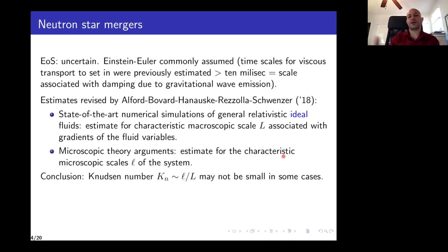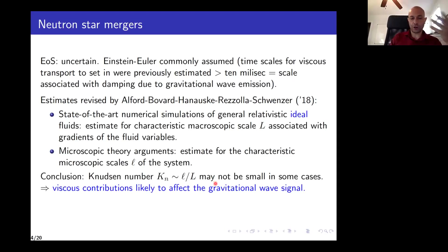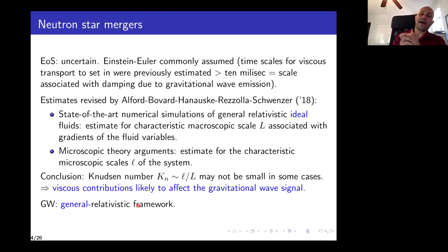Once they have these two estimates they can get an estimate for the Knudsen number. Their main conclusion is that the Knudsen number may not be small in some cases. If the Knudsen number is not small, then viscosity is going to be important. This tells us that viscous contributions are likely to affect the gravitational wave signal. So neutron star mergers are another example of a system where you want to go beyond the ideal model and include viscosity — and since we're discussing gravitational waves, we're in the realm of general relativistic fluids.